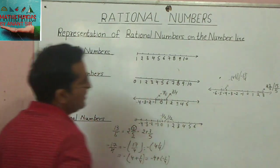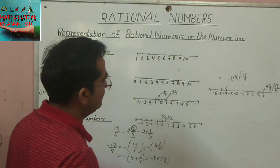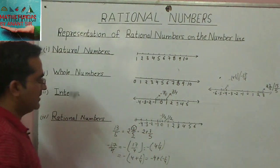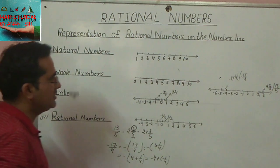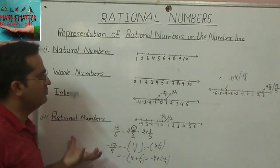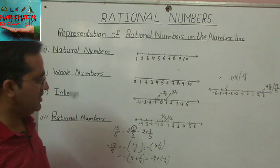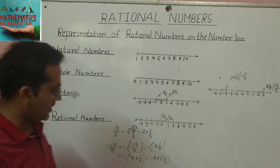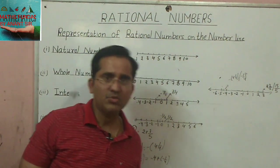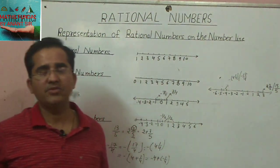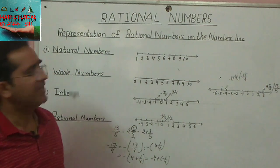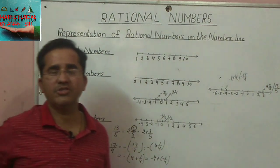I hope this is clear. This is the way how to represent rational numbers on the number line. It's very easy — if you revise this once, twice, or thrice, you can easily understand. Thank you for watching.